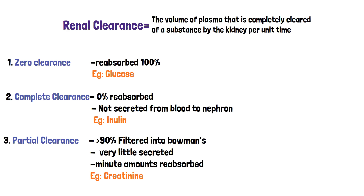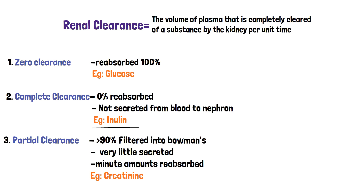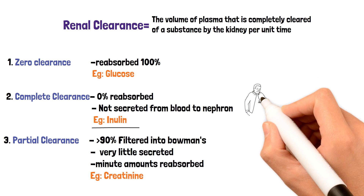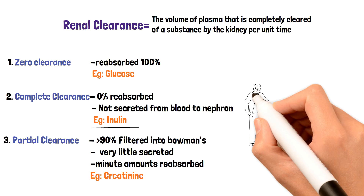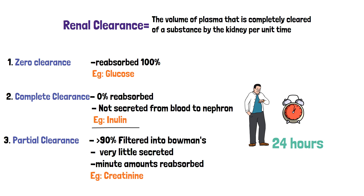An ideal serum marker is freely filtered at the glomerulus and, once in the nephron, is neither secreted nor reabsorbed. So theoretically, our ideal serum marker would be inulin. However, inulin is not naturally produced in the body — it has to be injected 24 hours prior to the test, which is very time-consuming and impractical in clinical practice. That is when creatinine comes into play.